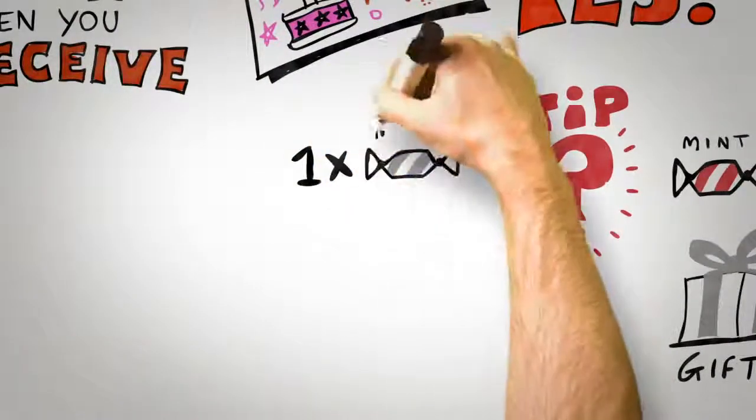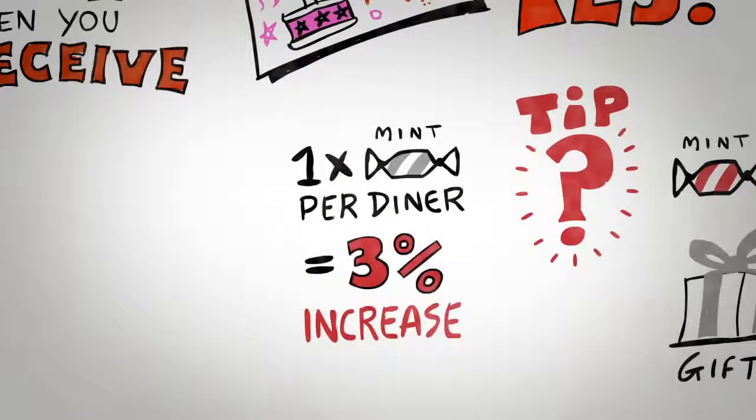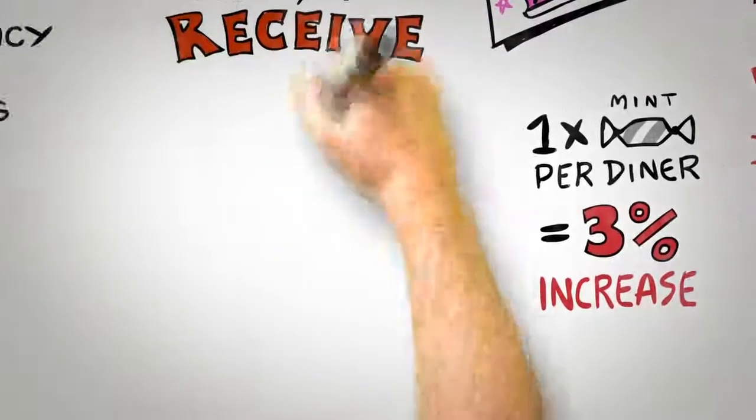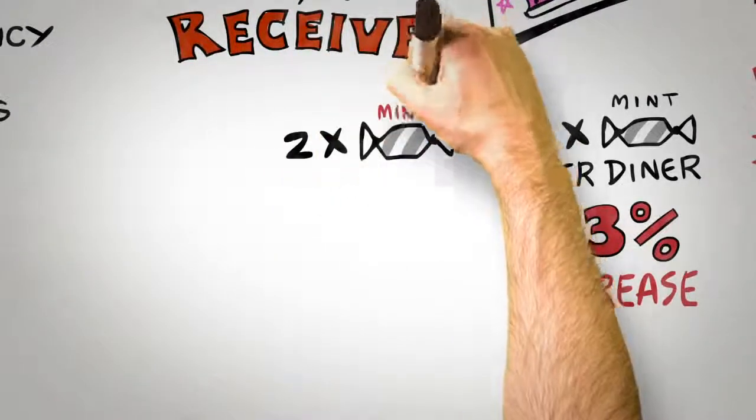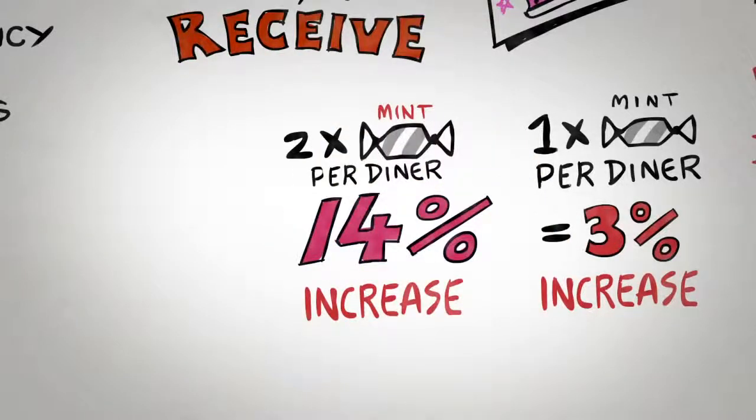In the study, giving diners a single mint at the end of their meal typically increased tips by around 3%. Interestingly, if the gift is doubled and two mints are provided, tips don't double. They quadruple, a 14% increase in tips.